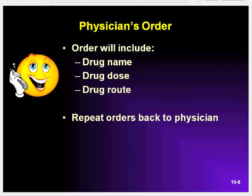The physician's orders will include the name, dose, and route of the drug to be given. Make sure you clearly understand the orders received from medical direction. Repeat the orders back to the physician, including the name of the drug, dose, and route of administration. If an order received from medical direction is unclear or seems incorrect, ask the physician to repeat the order. You really need to make sure it's within your scope of practice — if a physician tells you to do something that is not in your scope of practice, you should not do it.